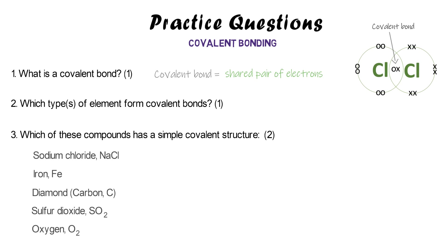Covalent bonding can only occur between non-metals, whether two atoms of the same element or different elements — they must be non-metals. Of that list, the only ones made of non-metals only are the last three. But diamond is one of those giant covalent examples.